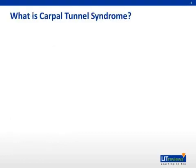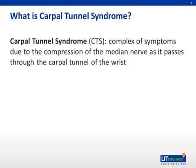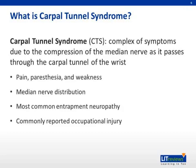So first, I'll start with the definition. Carpal tunnel syndrome is the complex of symptoms that results from the compression of the median nerve as it passes through the carpal tunnel of the wrist. These symptoms typically include pain, paresthesia, and weakness in a pattern that follows the distribution of the median nerve. Although there are many nerve compression syndromes, carpal tunnel syndrome is the most common entrapment neuropathy, and has gained significant notoriety due to an increased rate at which it has been recognized as an occupational hazard.